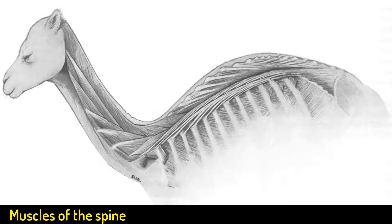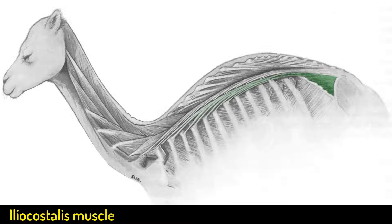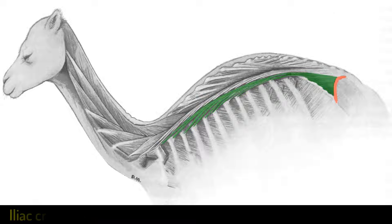We are going to start off with the first muscle: the iliocostal muscle, which has two parts — the lumbar and the thoracic part. The lumbar part originates from the iliac crest, as you can see here highlighted in red, and inserts on the transverse process of the lumbar vertebrae two to seven.